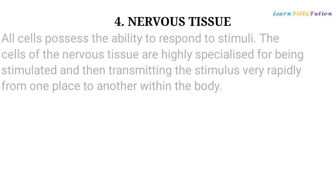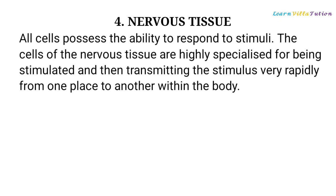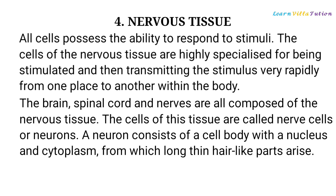Nervous Tissue: All cells possess the ability to respond to stimuli. The cells of the nervous tissue are highly specialized for being stimulated and then transmitting the stimulus very rapidly from one place to another within the body. The brain, spinal cord, and nerves are all composed of nervous tissue. The cells of this tissue are called nerve cells or neurons. A neuron consists of a cell body with a nucleus and cytoplasm from which long, thin hair-like parts arise.